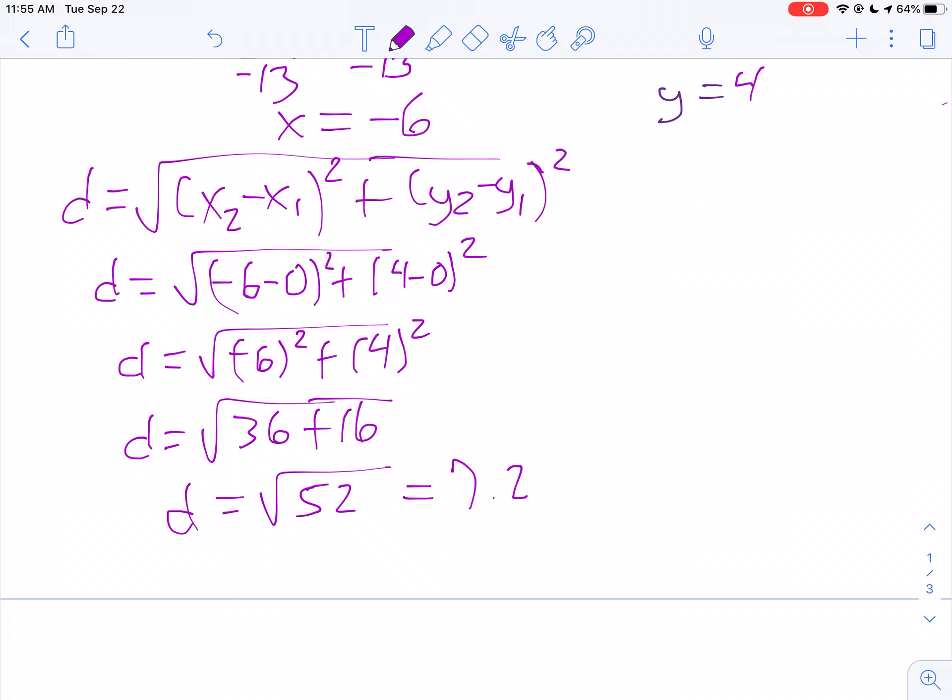Now remember, this is in meters. Our answer wants it in centimeters. Well, there are 100 centimeters in a meter. So we just move it over two places and you get 721 centimeters rounded to the nearest centimeter. That's your answer.